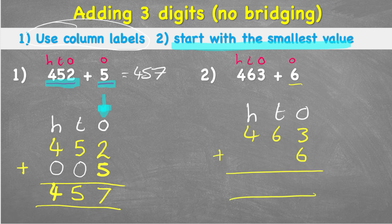And again, start from my smallest value, which is my 1s column. And this time I'm not going to use a number line. I'm going to look at 3 add 6. And I'm going to do that on my fingers.